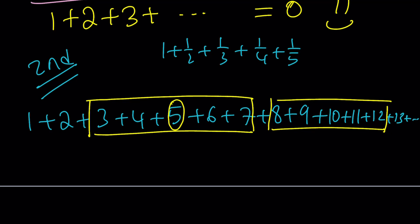So this sum is actually 5 times 5, because there are 5 terms, which is 25. This sum is 5 times 10, because there are 5 terms, which is going to be 50.